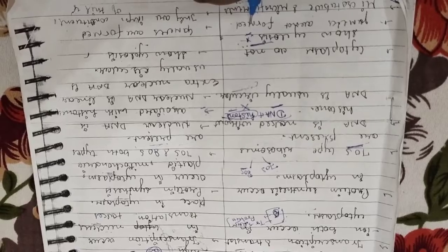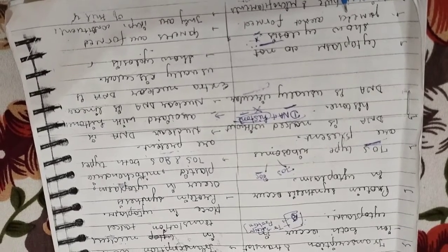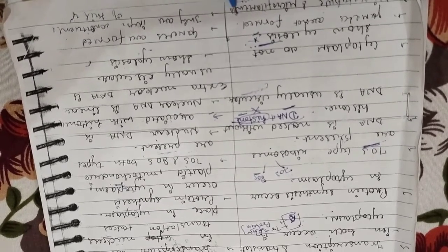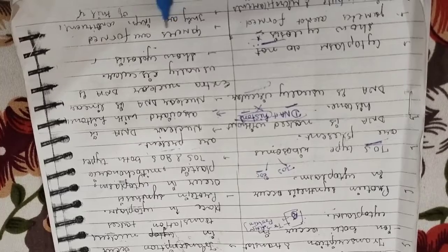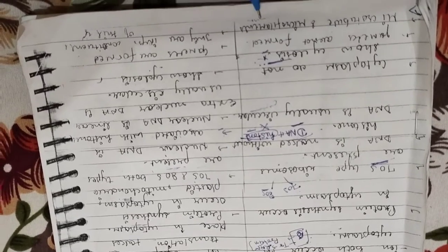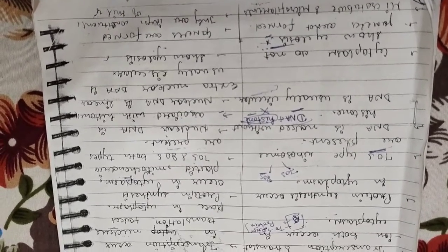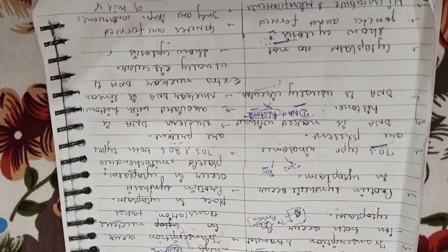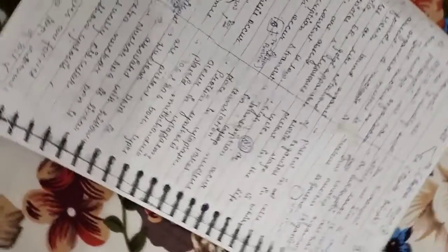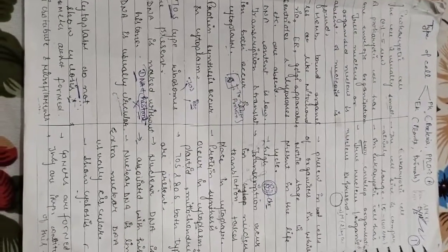Next difference: in prokaryotic cells, gametes are not formed because sexual structures are absent — meiosis does not occur. So gametes and filaments will not be seen in prokaryotic cells. This is all about the differences between prokaryotic and eukaryotic cells. Keep studying!